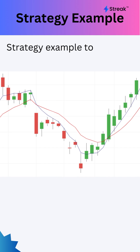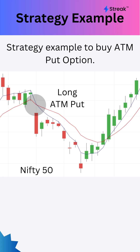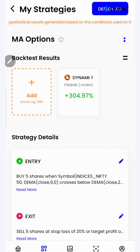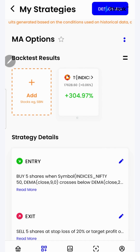Now, using a simple strategy, we will learn how we can create and backtest an option strategy to buy the at-the-money put option whenever 9 DEMA crosses below 20 DEMA on the Nifty index. Let's go to the Streak platform and check the performance of this strategy on historical data. I have attached a link to this strategy in the description so that you can open this strategy on your device.